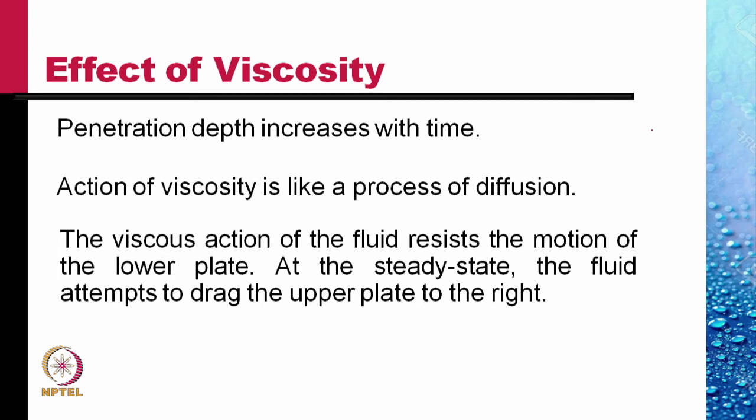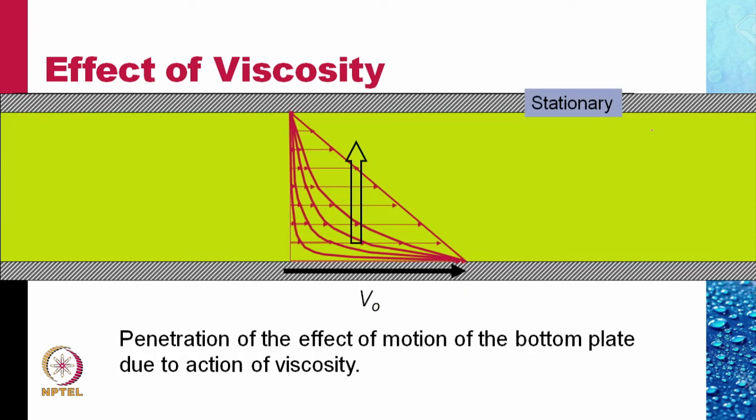The viscous actions of fluid resist the motion of the lower plate. At this steady state, the fluid attempts to drag the upper plate to the right. There would be shear stress on the lower plate in that direction. So we need to apply a force constantly on the lower plate to keep it moving. Not only this, this fluid would apply a shear force in that direction on the upper plate. So we need to apply a force on the upper plate in the opposite direction to keep it stationary, to overcome this effect of drag on the upper plate.